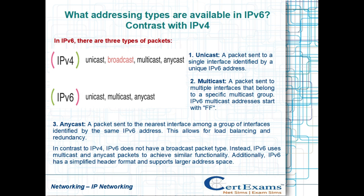In IPv6, there are three types of packets. Unicast: a packet sent to a single interface identified by a unique IPv6 address.